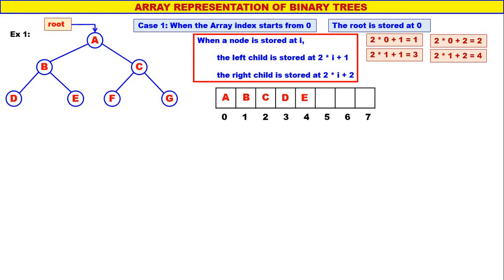Left child of c is f, and c is stored at 2, so f is stored at 2*2+1 = 5. Right child of c is g, and c is stored at 2, so g is stored at 2*2+2 = 6. Now all the nodes are stored in the array. Quite simple.